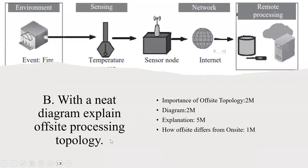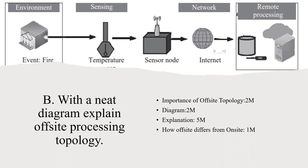For 'explain off-site processing topology with a neat diagram,' the diagram should be the first priority. Draw a diagram showing an event, how sensing is done, and how data is transferred to remote processing through the network. That diagram carries two marks, and explanation of each component carries five marks. Before the diagram, explain the importance of off-site topology and why you are choosing it over on-site.